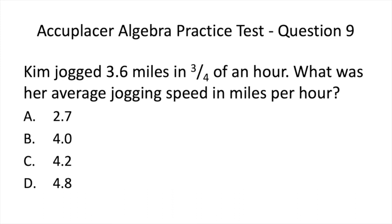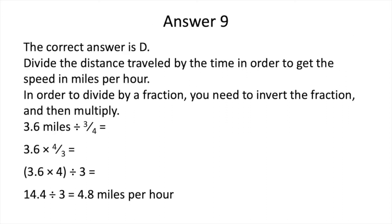Let's go on to Question 9. Now pause to solve. The correct answer is D. Divide the distance traveled by the time in order to get the speed in miles per hour. In order to divide by a fraction, you need to invert the fraction and then multiply. So we have 3.6 miles divided by 3 fourths, which, when converted, is equal to 3.6 miles times 4 thirds. Carrying out the operations, 4.8 miles per hour is the correct answer.